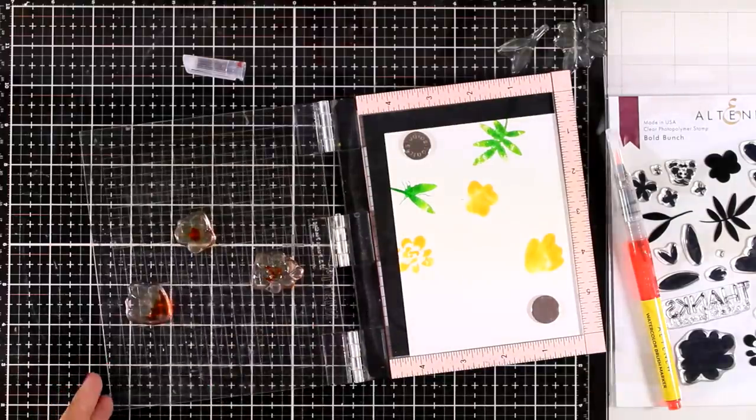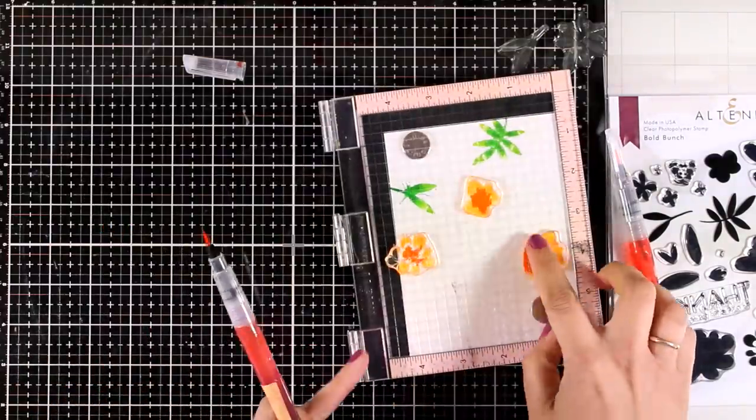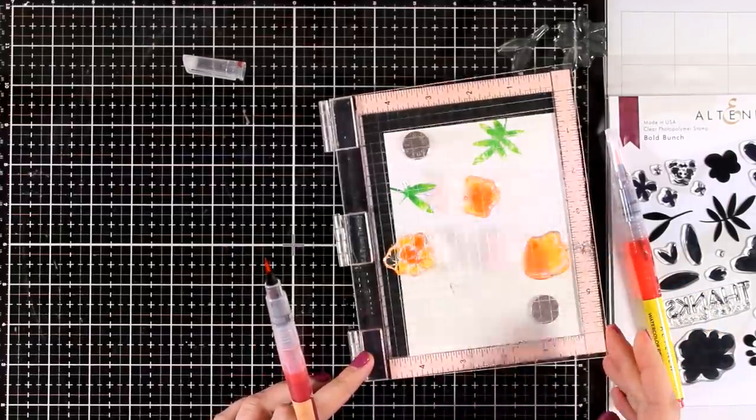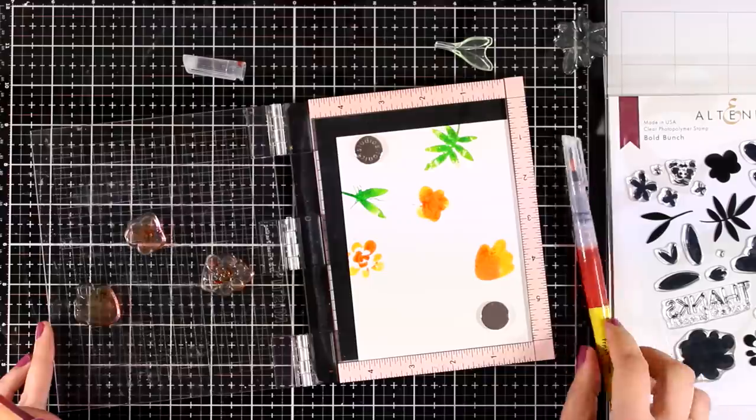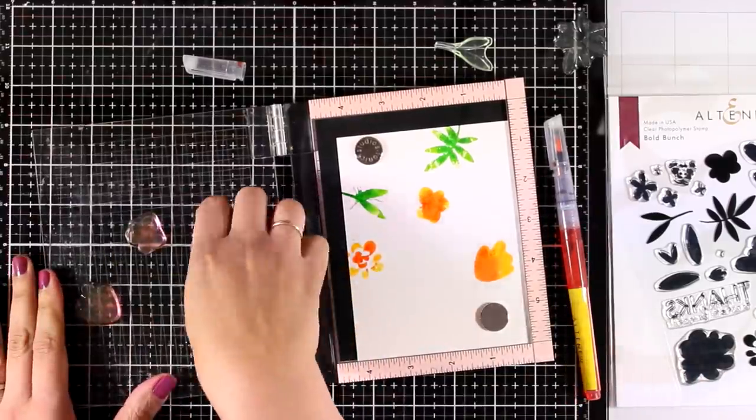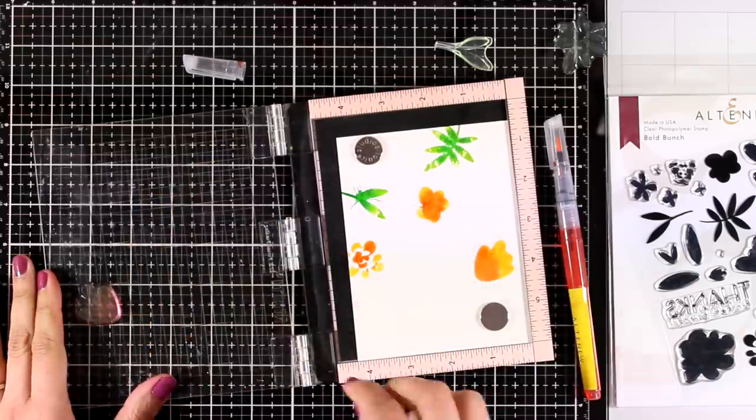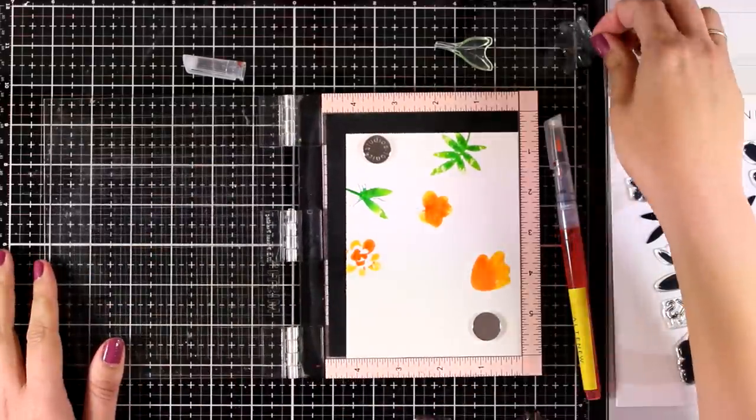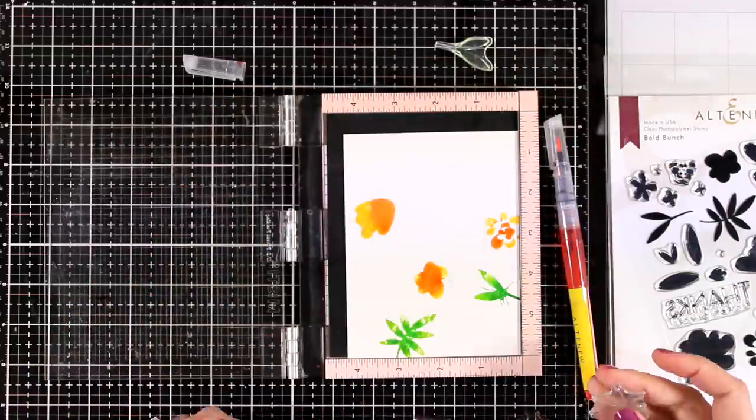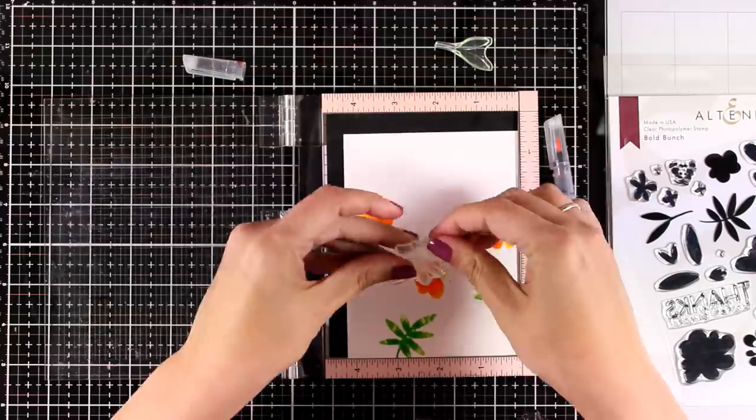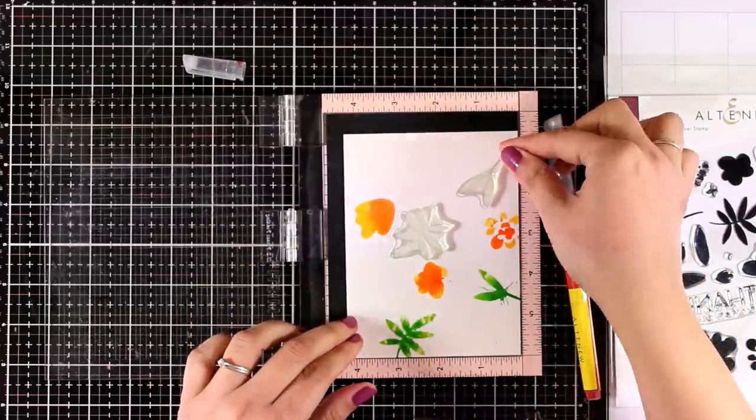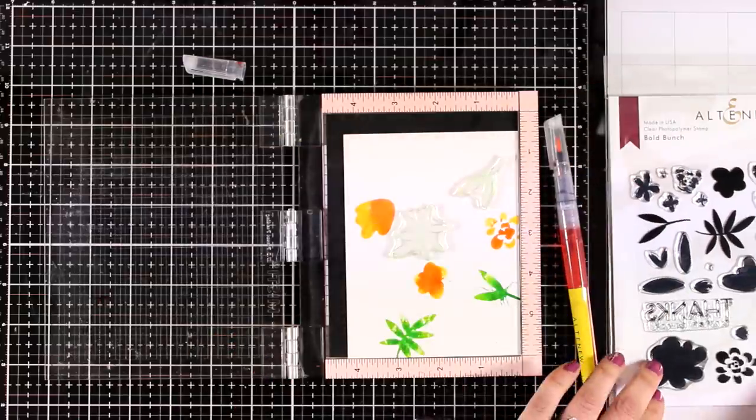Also keep in mind that all the watercolor brushes that I'm using today come from this Tropical Fiesta set of brush markers. I'm not using any other colors from the previous sets that have been released although I do have them, just because I wanted you to see that with that color palette you get enough colors to start with and you can do lots and lots of different variations. And I will continue laying down the flowers and the leaves in different positions until I'm happy with the outcome. I will not introduce any new colors. I will just use those four colors that I started with. All the flowers are going to be identical in terms of color as well as the leaves.